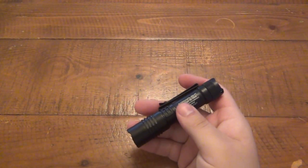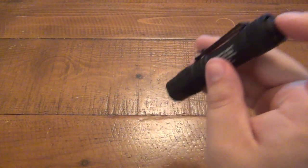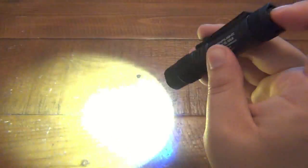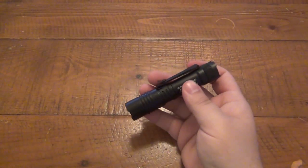This is the default mode. So when you get this flashlight, that's how it's set up. High, strobe, low.